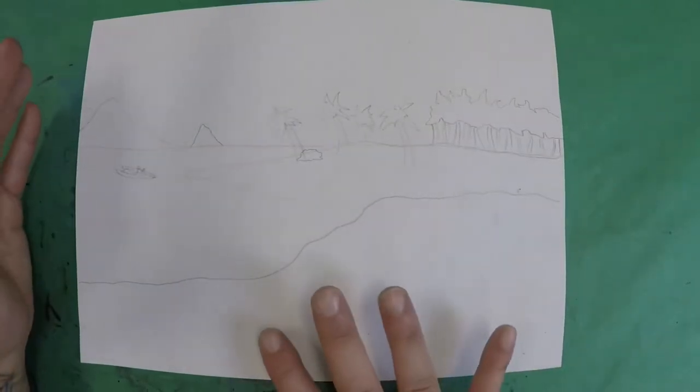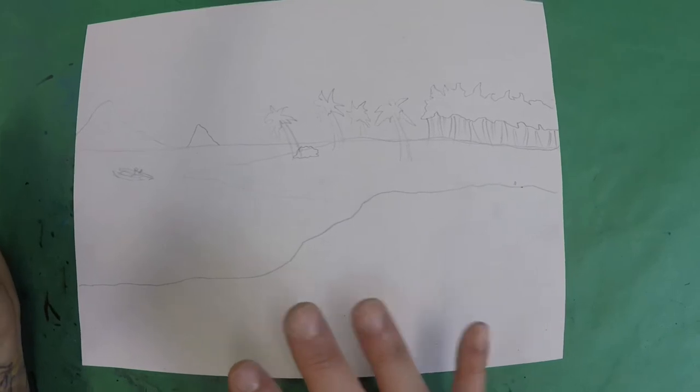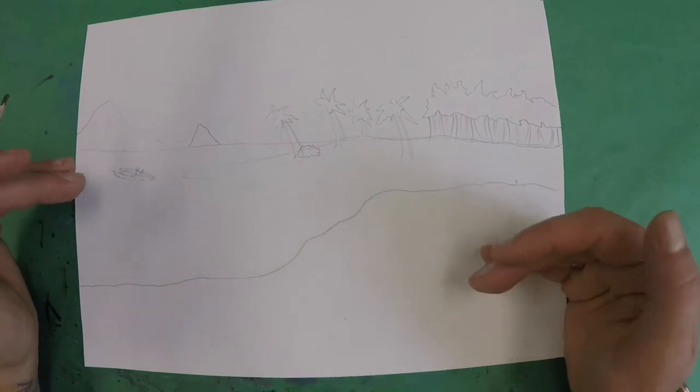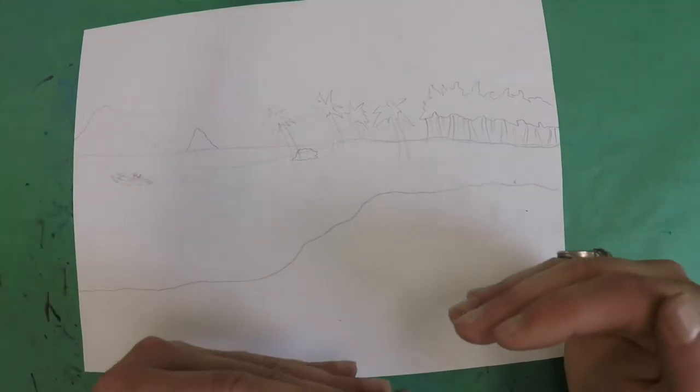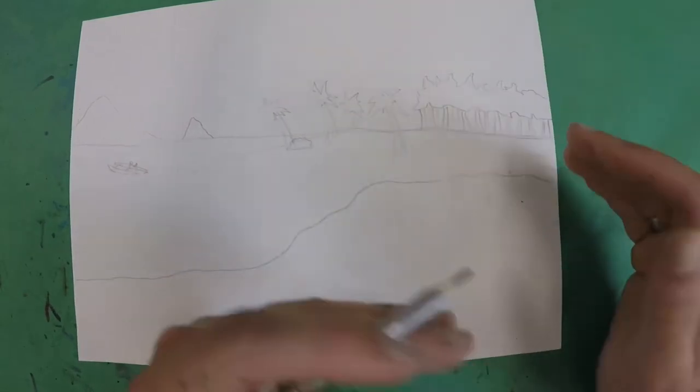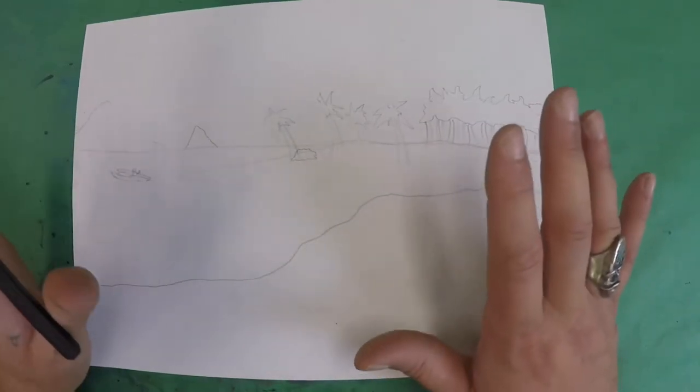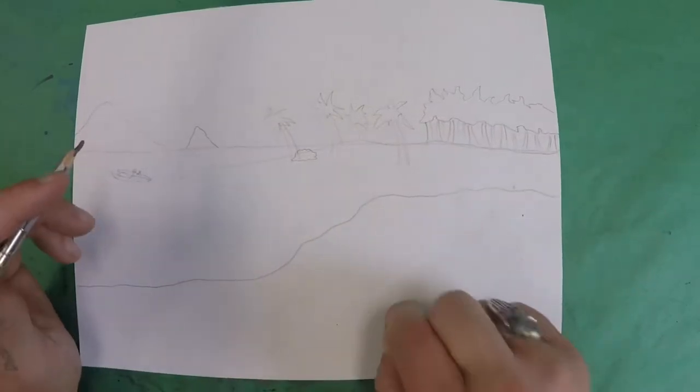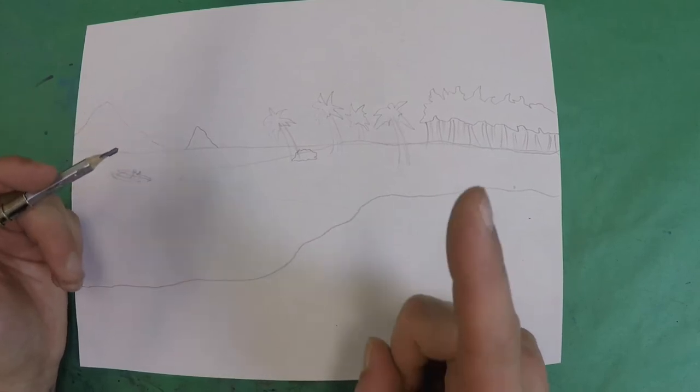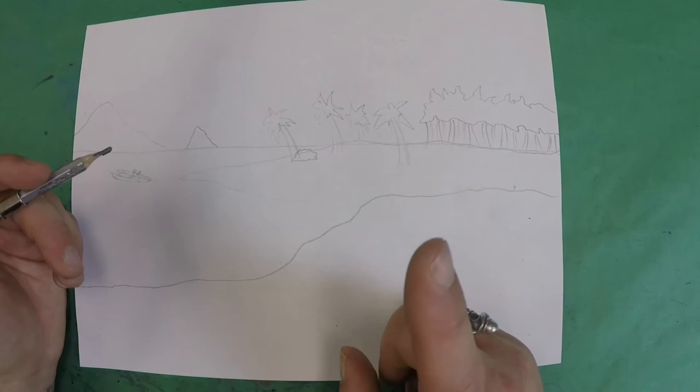So that being done, we're going to move ahead into our foreground. Now down here in your foreground, again, I want you to add at least four trees. Now with these trees, remember, foreground means they're close to us, so we need to draw them really big, which means chances are we're probably going to overlap some of this other stuff and need to go back and erase it. That's okay. So down here, four trees, really big, and I want you to add at least one animal to this part.